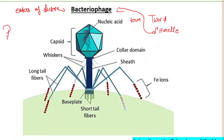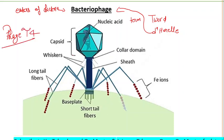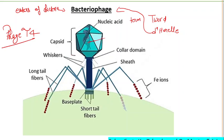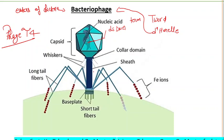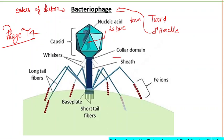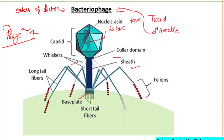Phage T4 has a linear double-stranded DNA molecule enclosed in a capsid attached to a tail. The T4 capsid is an elongated icosahedron with an elaborate tail structure including a collar at the base of the head, a rigid tail surrounded by a contractile sheath, a sheath attached to a basal plate, whiskers, and long tail fibers.